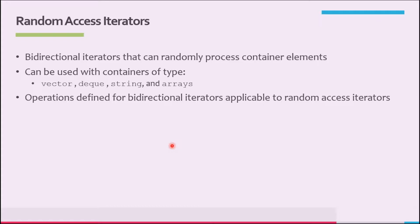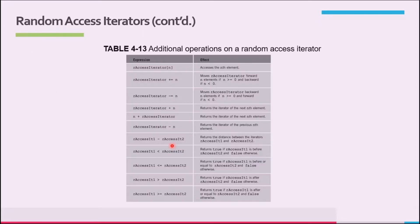Random access iterators are bidirectional iterators that can randomly process the elements of a container. These iterators can be used with containers of type vector, deque, string, and array. The operations defined for bidirectional iterators (tables 4-11 and 4-12) are also applicable to random access iterators. Table 4-13 describes the additional operations defined specifically for random access iterators.